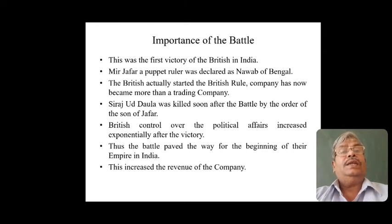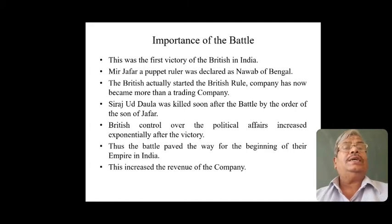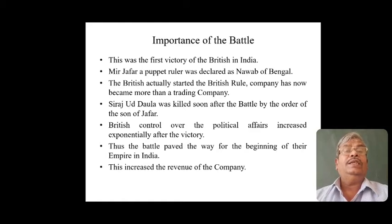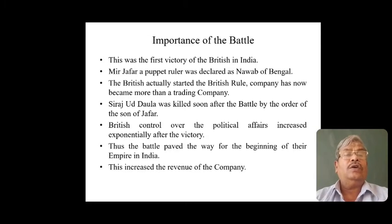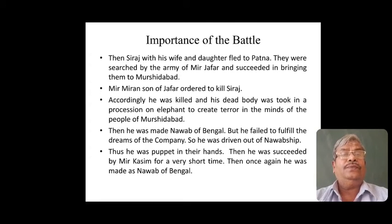After the victory, they appointed Mirjafar as Nawab, who was a puppet ruler. Hence, British rule truly started in Bengal, and the East India Company, which had earlier been a trading company, now began to interfere in the internal administration of India. Siraj ud-Daulah was killed and all political affairs were controlled by the British. This victory paved the way for the consolidation of British empire in India and also increased their revenue. Siraj ud-Daulah's wife and daughter fled to Patna, but they were searched and arrested by Mirjafar's army and brought to Murshidabad.